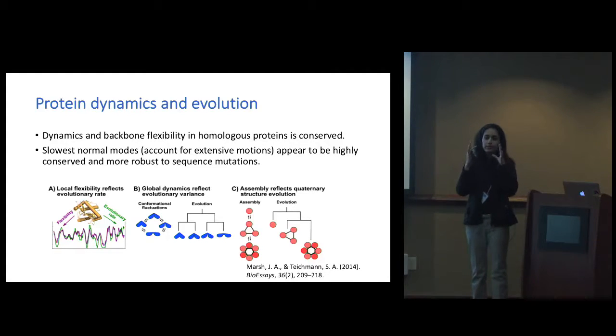This slowest normal mode can be taken as the mean of the motions of the protein, and other fluctuations that occur can vary along that specific mean. These slowest normal modes are more robust to sequence mutations. Conservation of flexibility and dynamics in evolution is conserved at three levels: at the residue level, in global dynamics reflected in conformational fluctuations, and at the assembly level of protein subunits in quaternary structure.